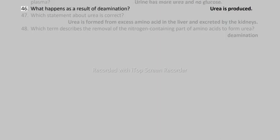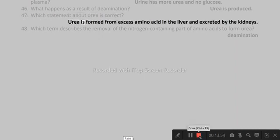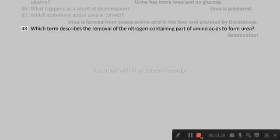44. What is filtered out of the blood in the glomerulus into the kidney tubule? Glucose and urea. 45. How do the concentrations of glucose and urea in urine compare to their concentration in blood plasma? Urine has more urea and no glucose. 46. What happens as a result of deamination? Urea is produced.